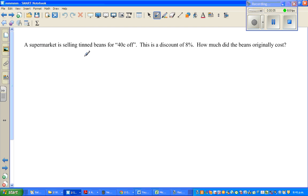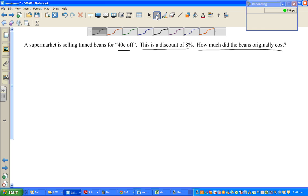A supermarket is selling tinned beans for 40 cents off. This is a discount of 8 percent. How much did the beans originally cost? So here what they're saying is they're selling at a discount of 8 percent, and that 8 percent is nothing but 40 cents off. So this is a tricky sentence to read.